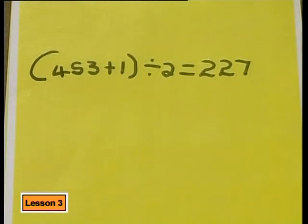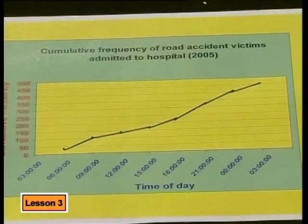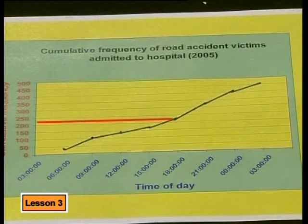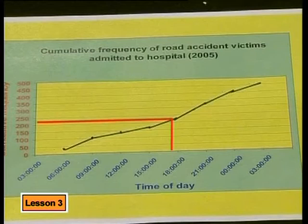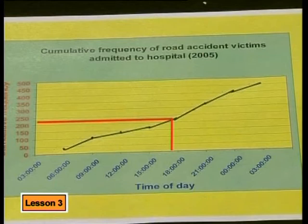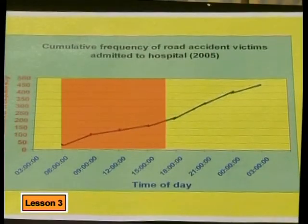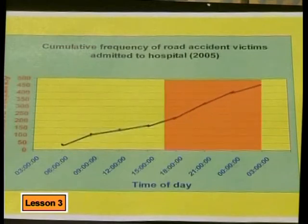The median position is the 227th value, with 226 values on either side. To find the value of the median, we draw a line from 227 on the y-axis to the graph and drop it down to the x-axis. The median value falls in the class interval of 1500 to 1800 hours, and we can see it is about 1700 hours, or 5 pm. The cumulative frequency up to this time is 227, telling us that by about 5 pm, about half of the road accidents have taken place.